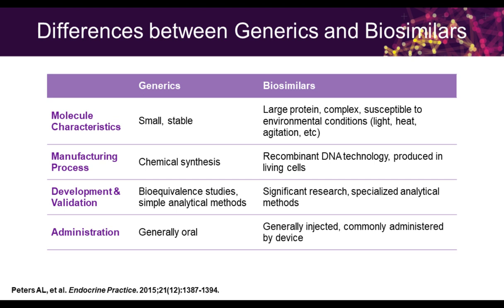This slide shows the differences between generics and biosimilars. Generics are small and stable. Biosimilars are large proteins — they're complicated and susceptible to environmental conditions like light, heat, and agitation, which can change the way they act. In terms of manufacturing, generics use a chemical synthesis process, while biosimilars are made from recombinant DNA in living cells. To develop and validate generics, you do bioequivalent studies using simple analytic methods. For biosimilars, you have to use very specialized analytic methods and prove in living human beings that they are similar to the compound you're trying to copy. Generics are generally oral; biosimilars are largely injected.